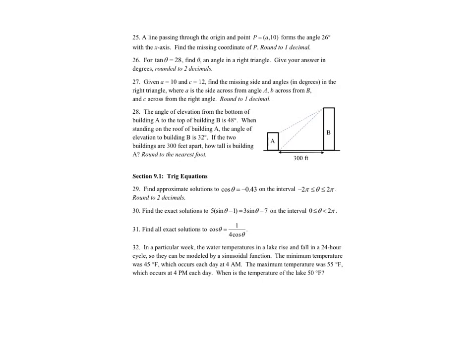On the first problem, a line passes through the origin and a point, and it forms an angle of 26 degrees with the x-axis. I want to find the missing coordinate of point P. If I drop a perpendicular it makes a right triangle. I know this side length is 10, this side length is A, and so the tangent of 26 degrees is going to be equal to 10 over A.